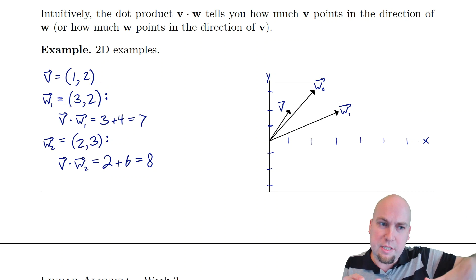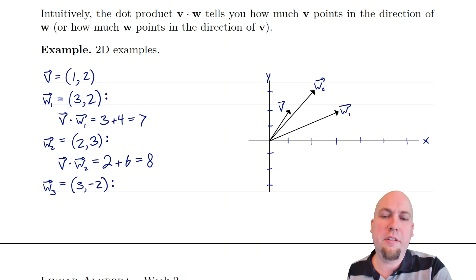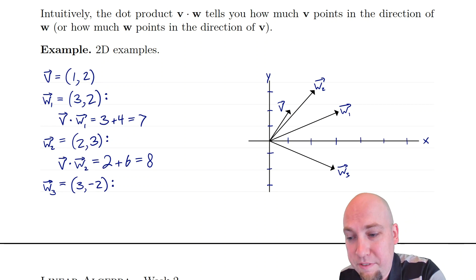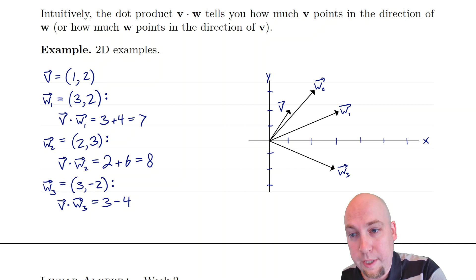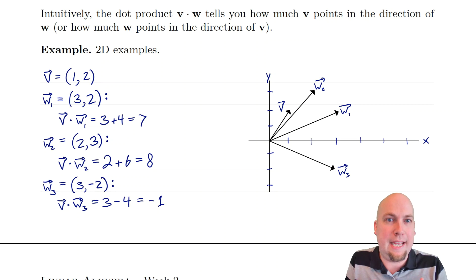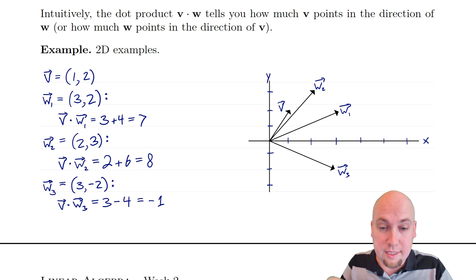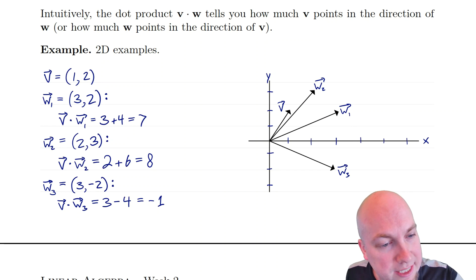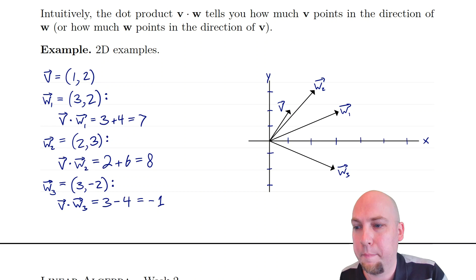If I rotate w1 away from v instead, the dot product gets smaller. Using the vector [3, -2] — pointing down and very far away from v — the dot product v dot w3 gives 3 times 1 is 3, and minus 2 times 2 is minus 4. Adding those up gives minus 1. So dot products can be negative. If you rotate a vector toward v, the dot product gets more positive; rotate away, and eventually it becomes negative.